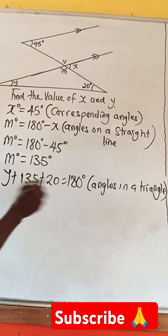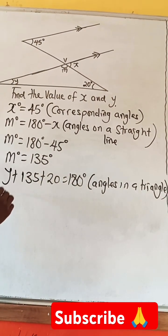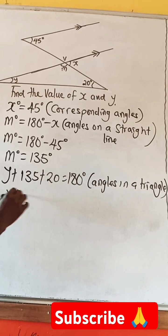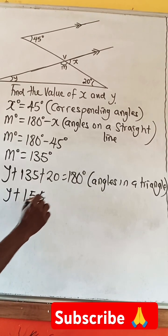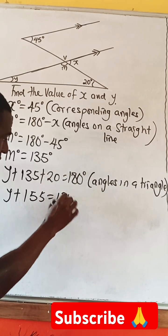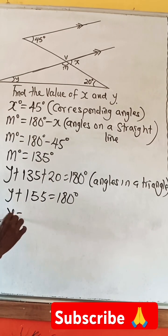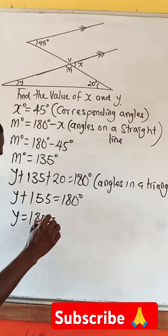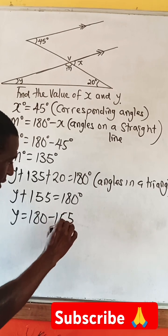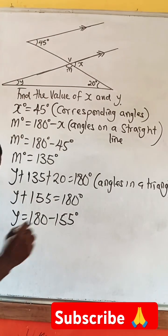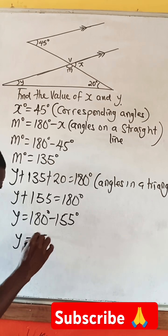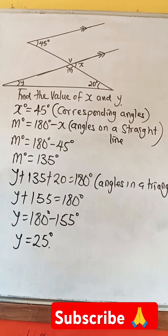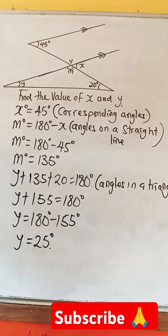So, we have Y plus 155 equals 180. So, Y equals 180 minus 155. If we subtract 155 from 180, we get 25 degrees. So, that's the value of Y.